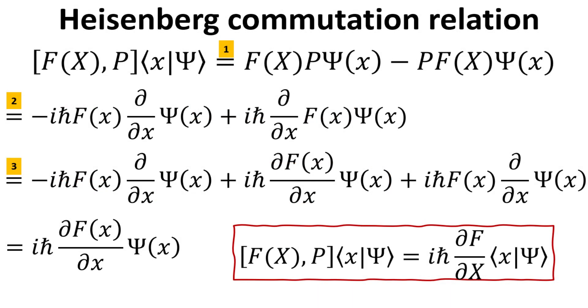It is also rather straightforward to extend the commutator identity to the case where the operator x is now a function of x as shown. Here, it is acting on the wave function ψ in the position representation. The first step is simply the definition of the commutator.